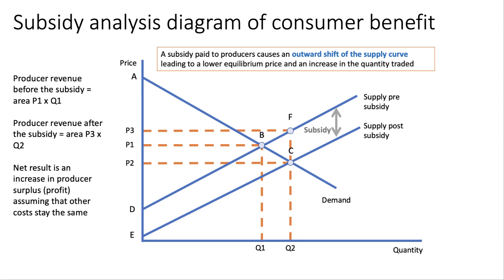So consumers benefit and producers benefit. But are subsidies cost free? Well, the answer of course is no — somebody has to pay for the subsidy. The area of government spending is going to be P3-F-C-P2. So it's not cost free. Ultimately, you can make a case for saying it's going to be the taxpayer that has to pay for it, or perhaps the government has to borrow more money to fund the subsidy.